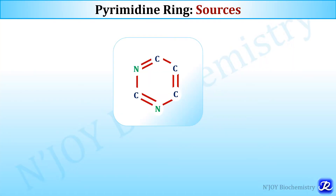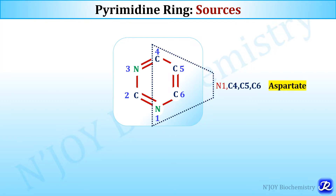Pyrimidines are simple aromatic compounds composed of carbon and nitrogen atoms in a 6-membered ring and the numbering starts from N, which is numbered as 1, C as 2, N as 3, 4, 5 and 6. N1, C4, C5 and C6 are contributed by aspartate, C2 is contributed by carbon dioxide, and N3 is contributed by glutamine.